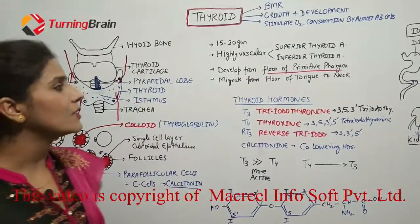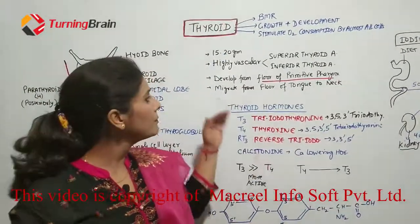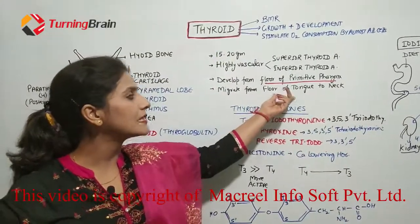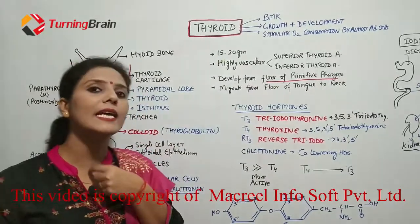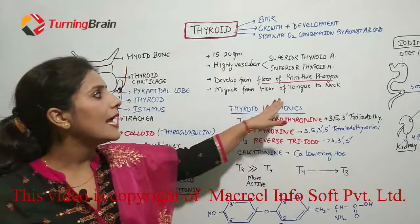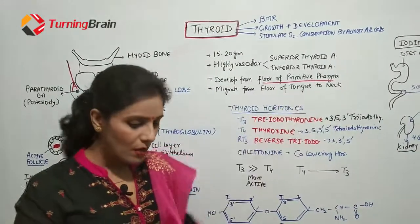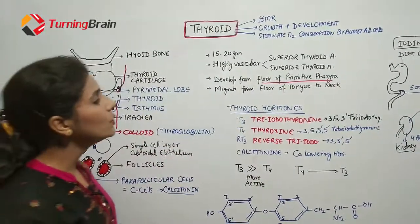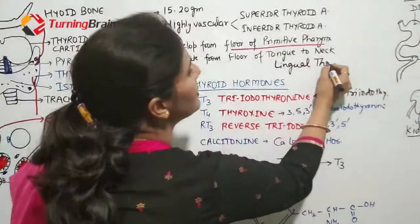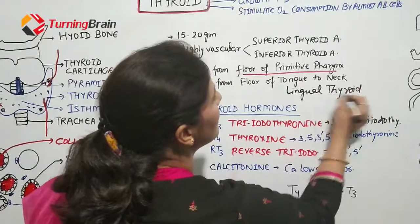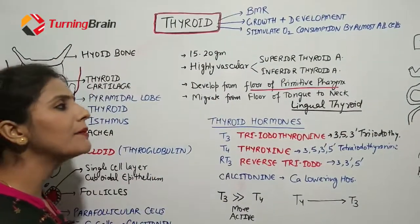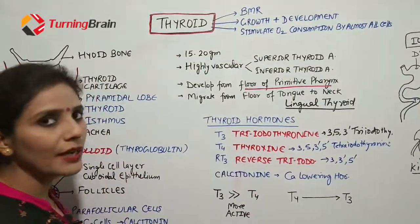Sometimes, due to an abnormality, this migration does not complete properly. So thyroid tissue can get deposited anywhere along the path from the tongue to the neck. We call this ectopic thyroid. When it is located in the back area of the tongue, we call it lingual thyroid — the word 'lingual' refers to the tongue.